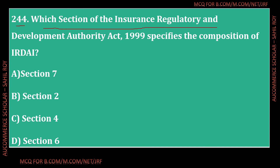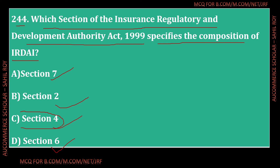Question number 244: Which section of the Insurance Regulatory Development Authority Act 1999 specifies the composition of IRDAI? Options: Section 7, Section 2, Section 4, or Section 6. The correct answer is Option C - Section 4. Section 4 of the Insurance Regulatory and Development Authority Act 1999 specifies the composition of IRDAI.